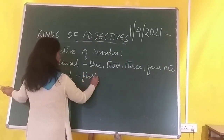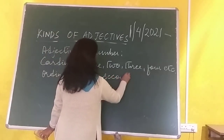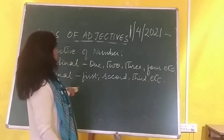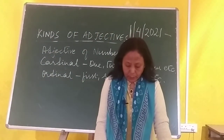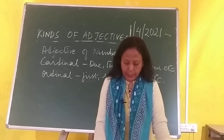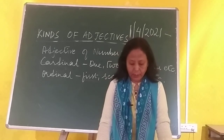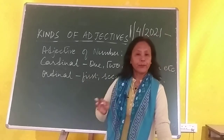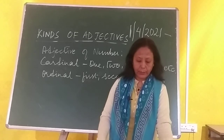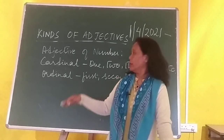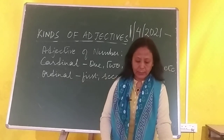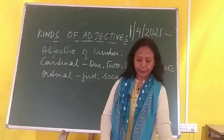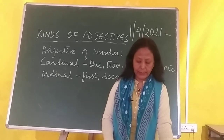Cardinals are one, two, three, four. In ordinal you have first, second, third, fourth. So in adjective of number you have cardinal and ordinal. Cardinals are one, two, three, four, five, six, and so on. Ordinals are first, second, third, fourth, fifth, sixth, seventh. You also have indefinite numeral adjectives under adjectives of number — indefinite includes all, no, some, any, and so on.